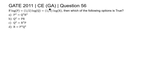This is question 56 of civil engineering general aptitude section of K 2011. If log P equals 1/2 log Q equals 1/3 log R, then which of the following options is true? There are 4 relations given in the 4 options. We need to select the correct relation based on this equation given in the question.